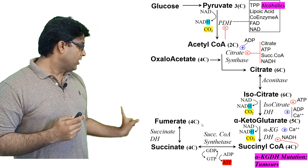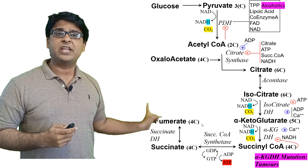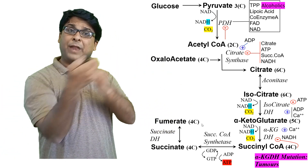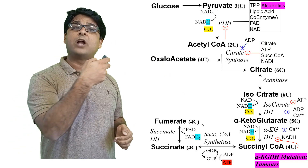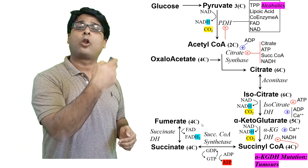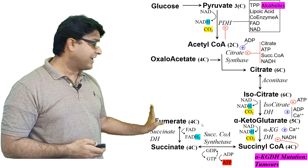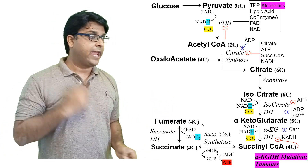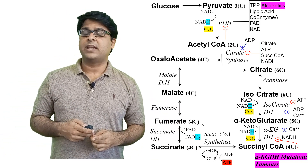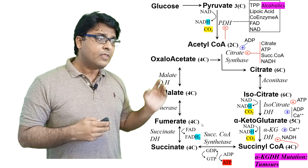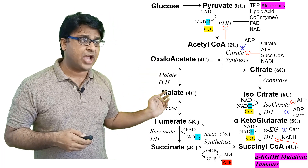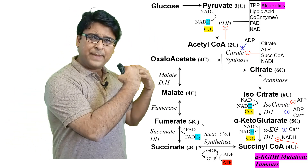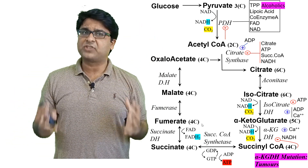Succinate is then converted into fumarate — note the enzyme here is succinate dehydrogenase. Since it is a dehydrogenase, electrons are plucked out and transferred to FAD, which is converted into FADH₂. Fumarate is then converted into malate, and malate is converted into oxaloacetate by their respective enzymes — and that is essentially the story of the Krebs cycle.